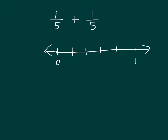Next we'll label it. We have 0, then 1 fifth, 2 fifths, 3 fifths, and 4 fifths. On our number line, let's show how we get 1 fifth plus 1 fifth. Here's where we start, that's our first fifth, and then that is our second fifth.